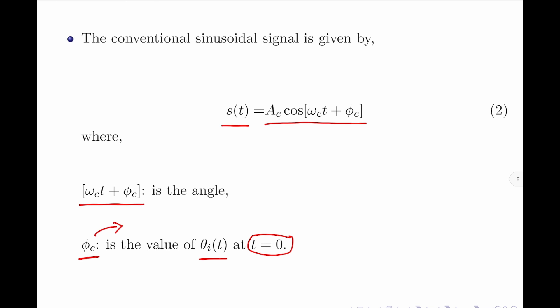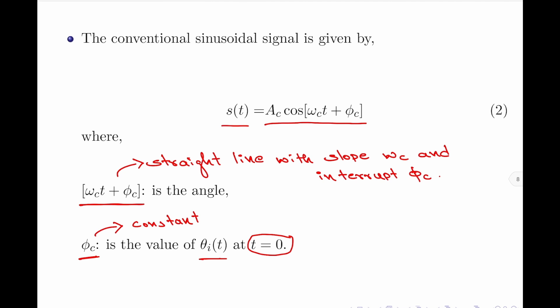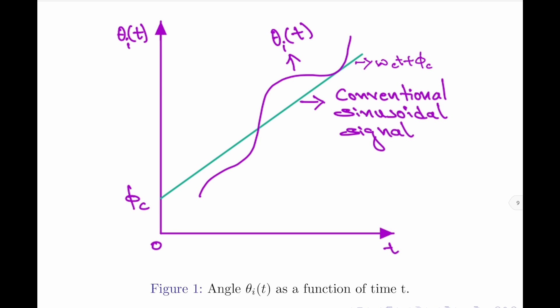It should be noted that φc is a constant because it is the phase at time t = 0, whereas ωc·t + φc represents a straight line with slope ωc and intercept at φc. Let us now graphically represent the variation of the angle θᵢ(t) as a function of time, as given in figure 1. The x-axis represents time and the y-axis represents the angle θᵢ(t). The green colored straight line represents the angle of the conventional sinusoidal signal, and θᵢ(t) represents the phase angle of the carrier.